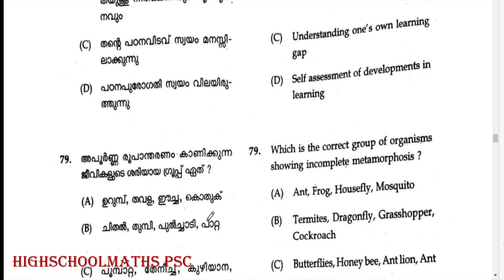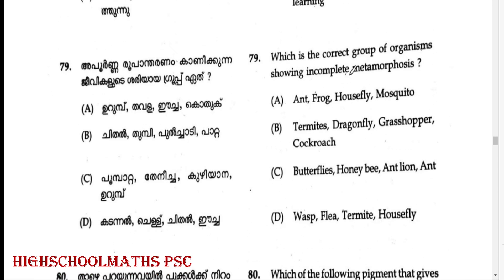Identify the correct group of organisms showing incomplete metamorphosis. Answer: Termites, dragonfly, grasshopper, and cockroach — this group shows incomplete metamorphosis.